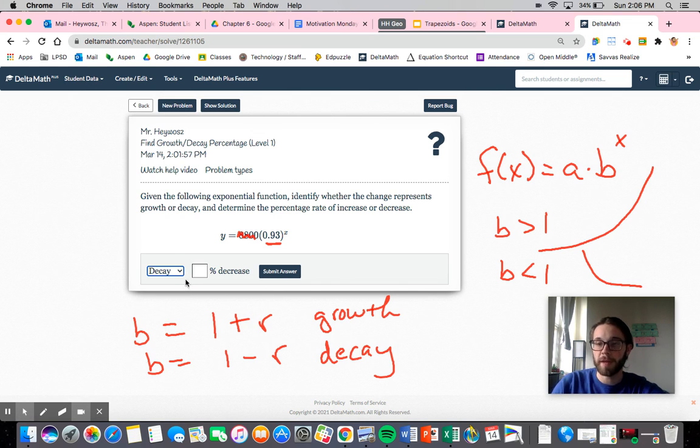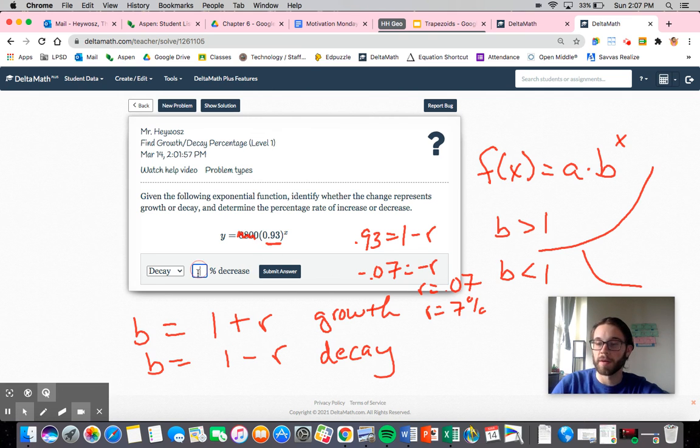Now we need to figure out what it's going to be, and we want a percent. So we know that my b is 0.93, so that's equal to 1 minus r. I subtract 1, subtract 1, I get negative 0.07 equals negative r. My r is going to equal 0.07, but I want that as a percent, so my r is going to be 7%. So essentially what this is saying is I have a 7% decrease for each iteration.